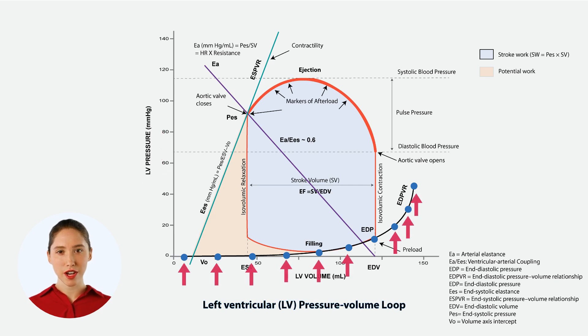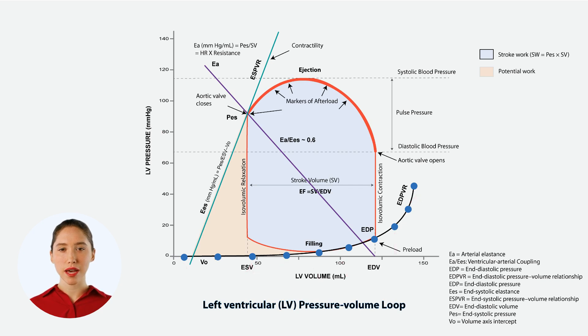Each point on the curve represents a specific volume and the corresponding pressure. By examining the shape of this curve, we can assess the compliance, or elasticity, of the heart muscle.